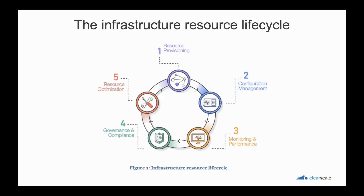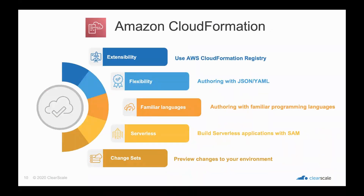Of these five stages, infrastructure as code is actually in the first stage — resource provisioning — and that's the only one we're going to touch on because it's one of the most important ones. In AWS, the service in charge of infrastructure as code is called CloudFormation. By now we understand that IaC is about deploying infrastructure in an automated and repeatable way. AWS CloudFormation is the tool to implement IaC. Let's talk about some of its features.